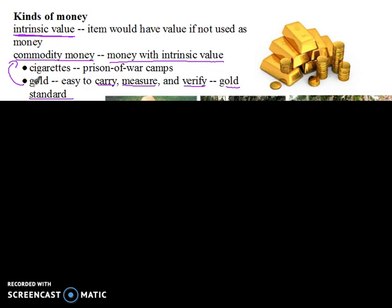It's commodity money if you use the gold directly for money. For much of more recent history, gold was used to back our money — the gold standard. Gold is commodity money because it has intrinsic value even if it were not used as money. Gold in the past has been used for fillings for teeth, and to make necklaces and jewelry. So it has value beyond just being used as money. Gold would be a form of commodity money.